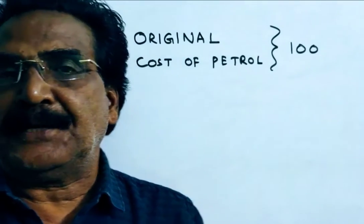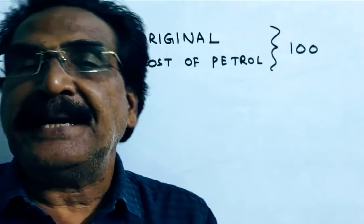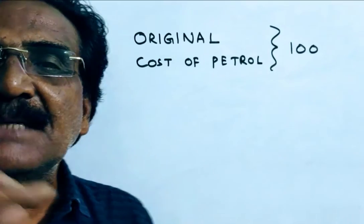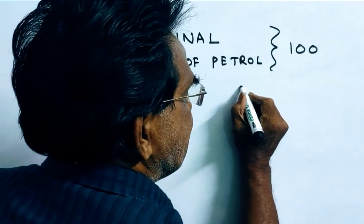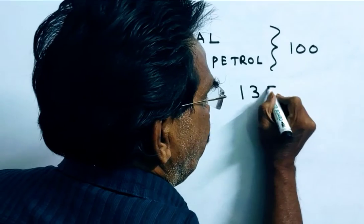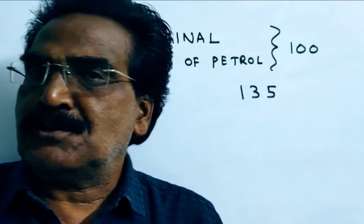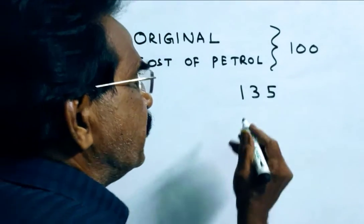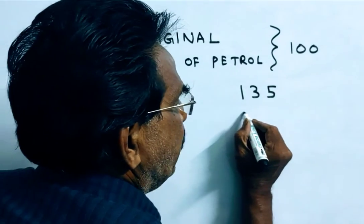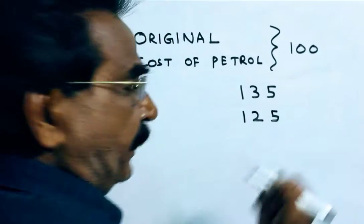Say the original cost of petrol is 100 rupees. Now the petrol price is increased by 35%, so the price of petrol is now 135 rupees. But Rajesh wants to spend only 25% additional amount on petrol, so Rajesh wants to spend only 125 rupees on petrol.